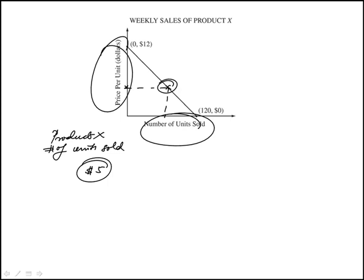So the price per unit is $5. We want to look at the corresponding number of units sold. To find the equation of this line, I'll start with slope and write the general form.